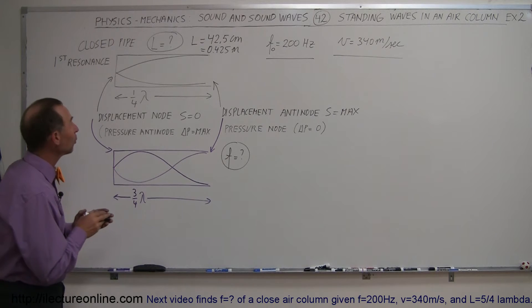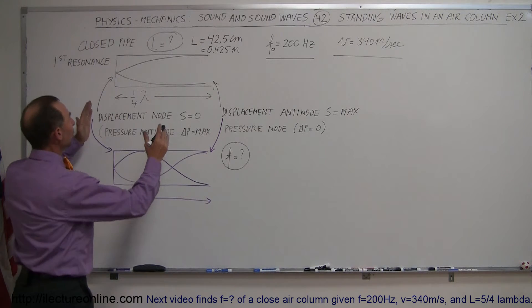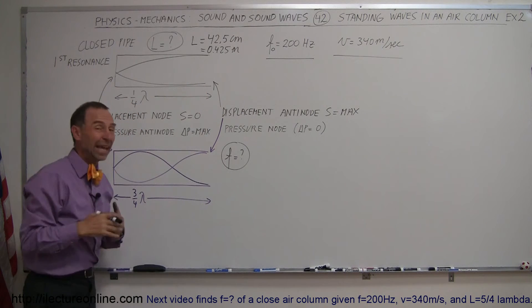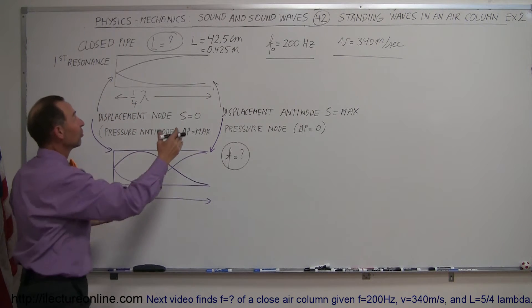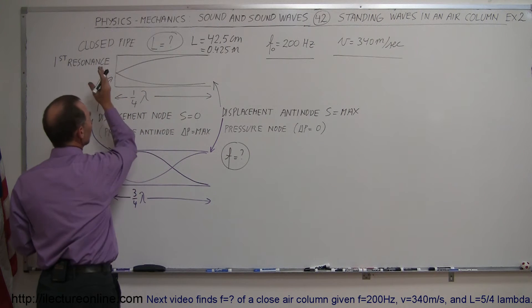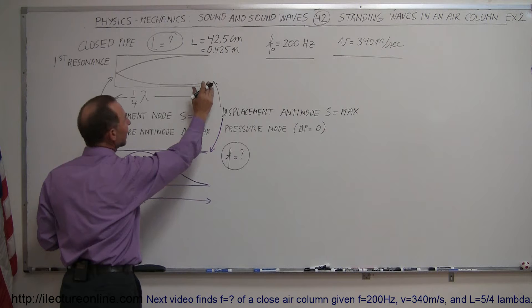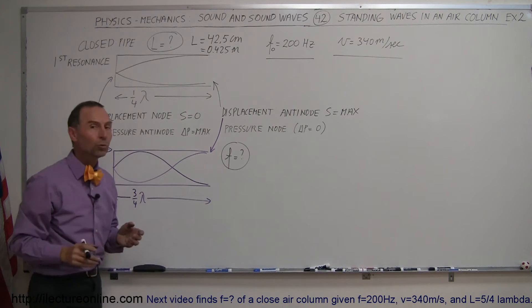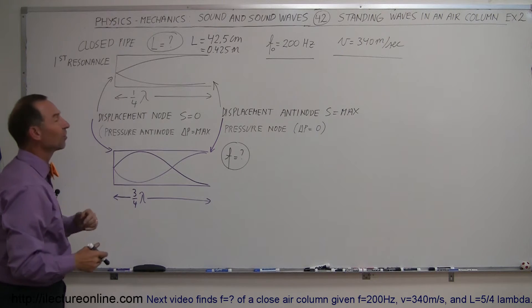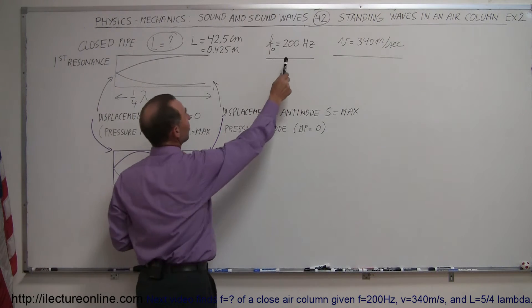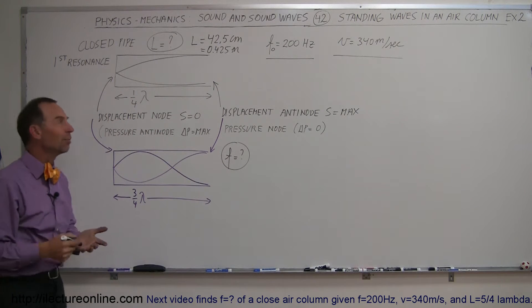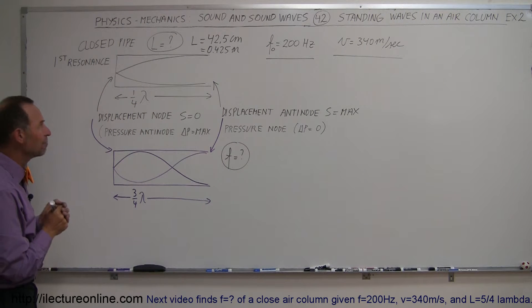In the previous example we saw that with a pipe and a sound wave of the correct frequency, hence the correct wavelength, inserted into the pipe in such a way that when it reaches the very end there is a displacement node and at the beginning there is a displacement antinode, we can have what we call a resonance frequency. We call that the first resonance and we found that with the frequency being equal to 200 Hertz, the length of the pipe had to be 42.5 centimeters or 0.425 meters.